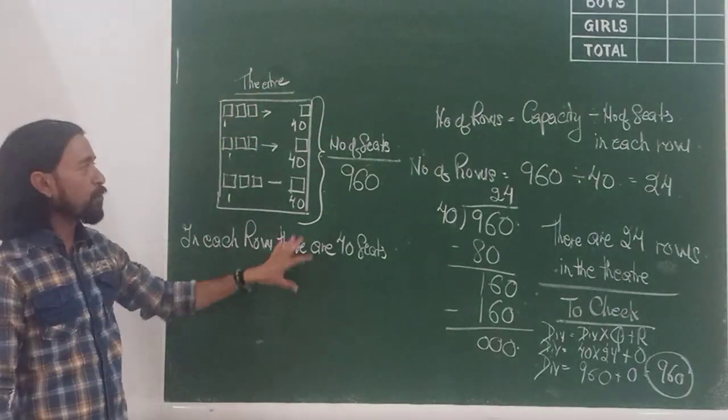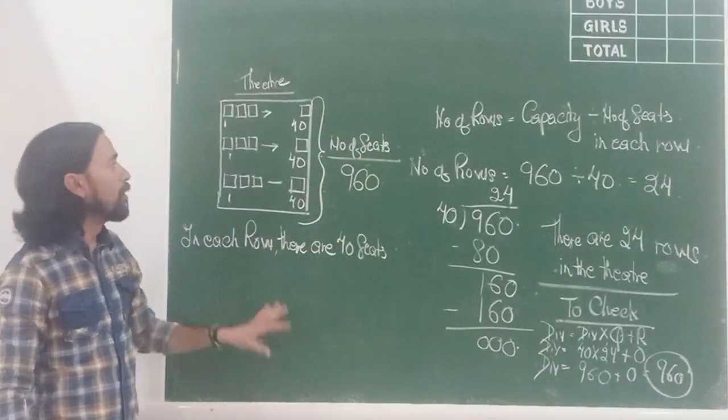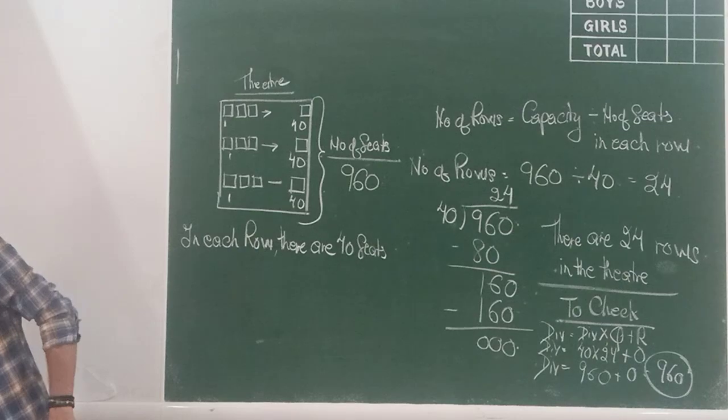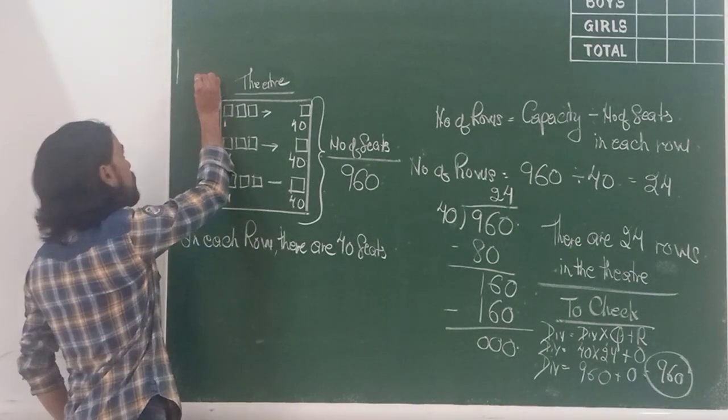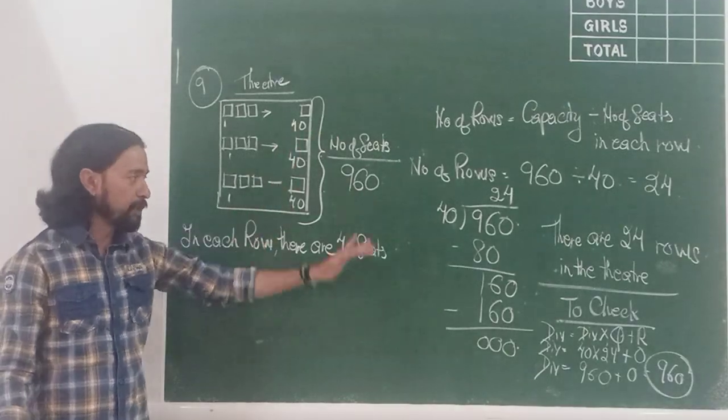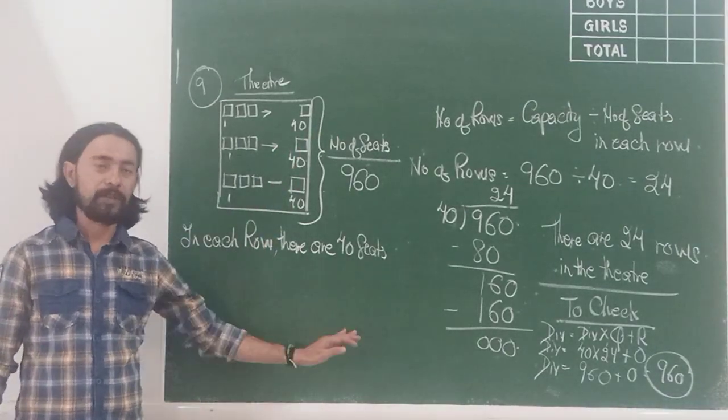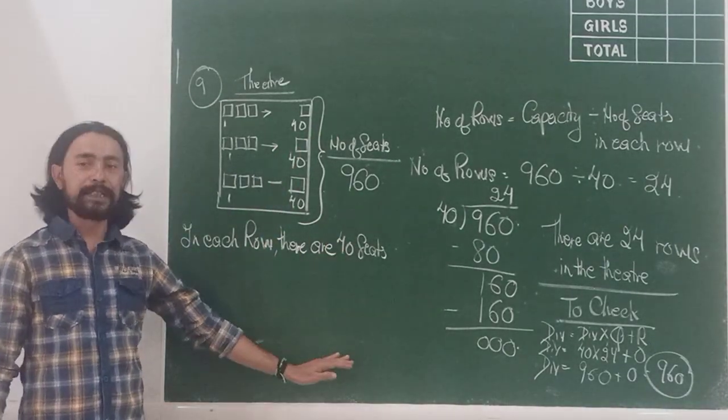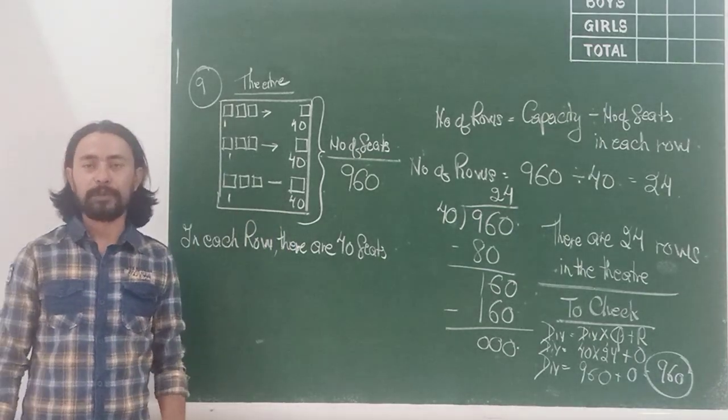Remember, this diagram has to be drawn. Everything that you see on the board for this particular sum, that is sum number 9, has to be written in your notebook. Please ensure that everything that is on the board right now, while I am making this video, has to be transferred into your notebook.